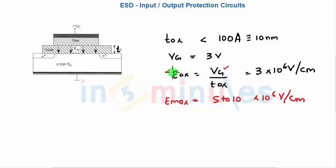Input protection circuits are circuits designed to provide discharge paths away from the transistor. It means that when a high voltage is applied at the input of the transistor, this circuit will ensure the high voltage does not reach the gate but instead has a path through which it can discharge to ground. These circuits are a combination of diodes and resistors only — very straightforward circuits.